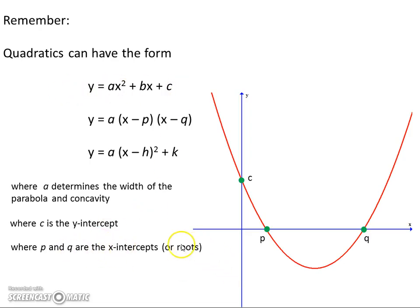P and q are the x-intercepts because if you put y equals 0 then one of these brackets has to be equal to 0. Null factor law, remember that. So you've got to either have x equals p or x equals q in order to get y equals 0.